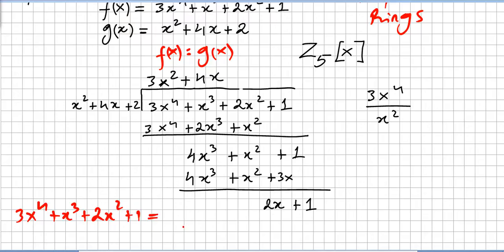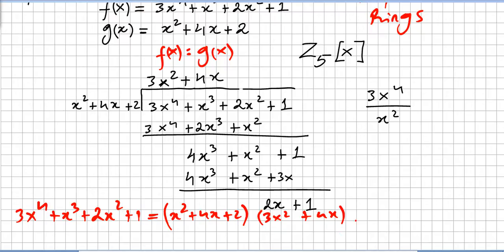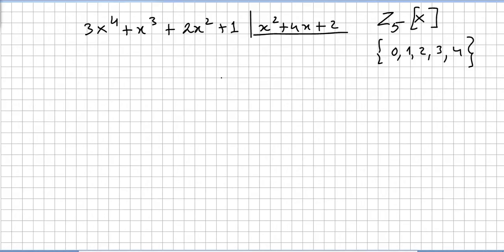So that's this long polynomial plus 1. I can factor it as: x squared plus 4x plus 2, times 3x squared plus 4x, plus the remainder 2x plus 1. Please do not forget we are in the field of polynomials with coefficients in Z5. I'm going to redo this example because in other countries long division is done differently.